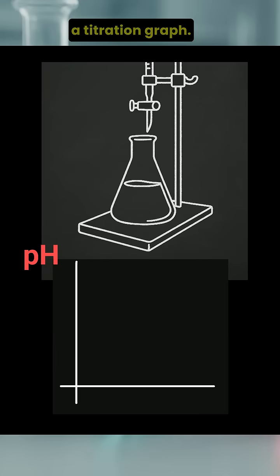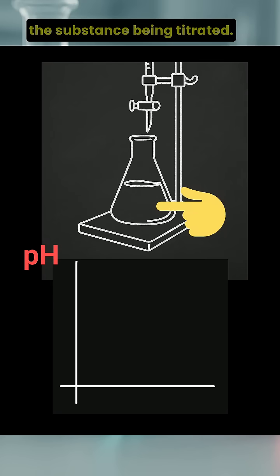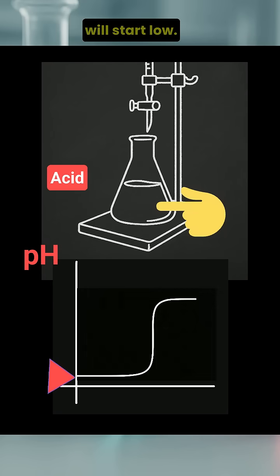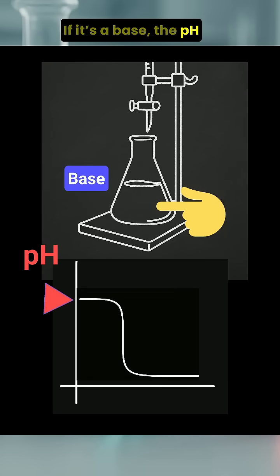In summary, here's how to read a titration graph. First, let's look at what's in the flask. That's the substance being titrated. If it's an acid, the pH will start low. If it's a base, the pH will start high.